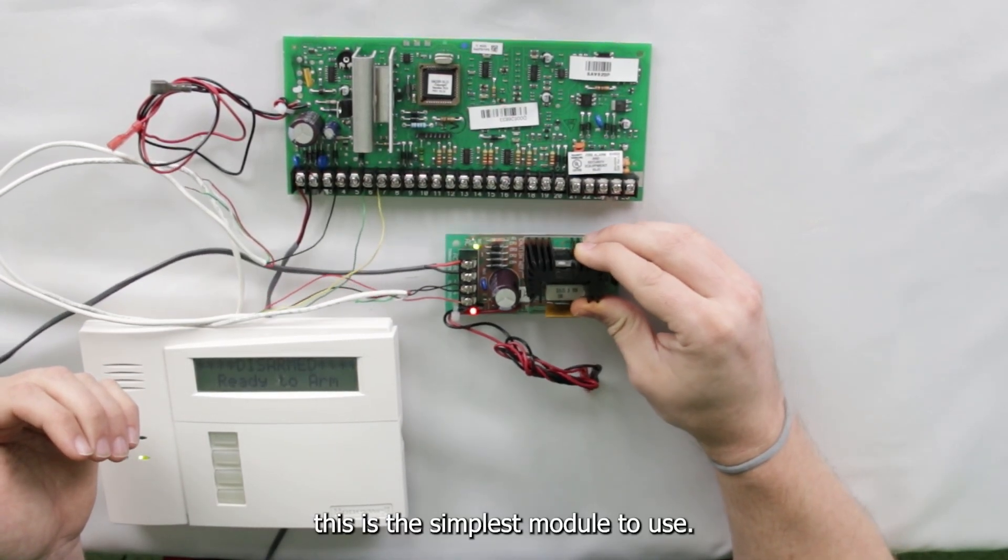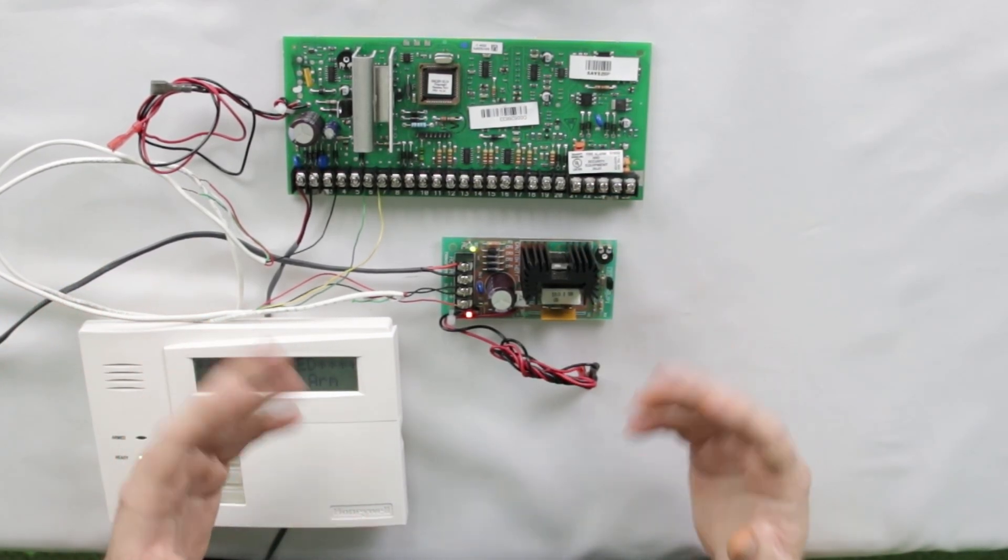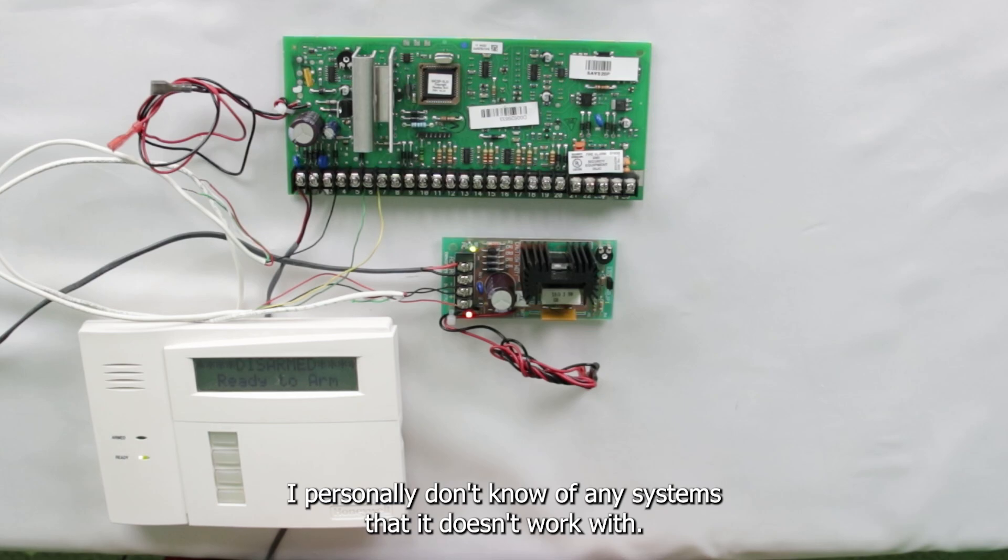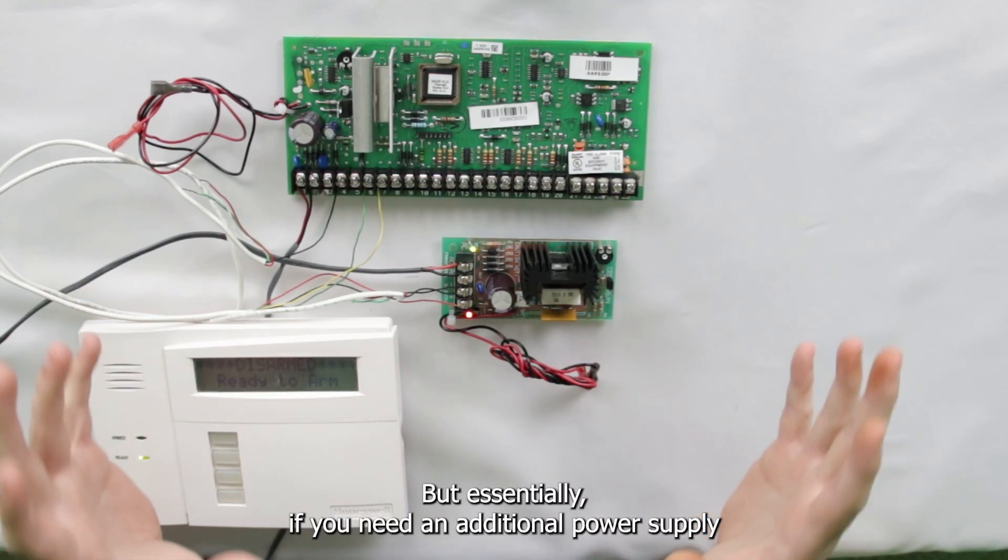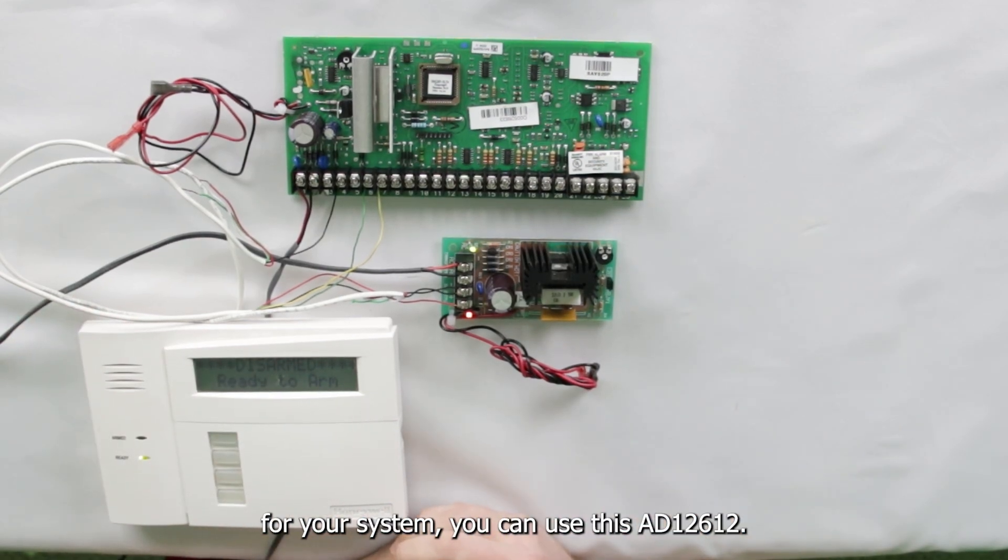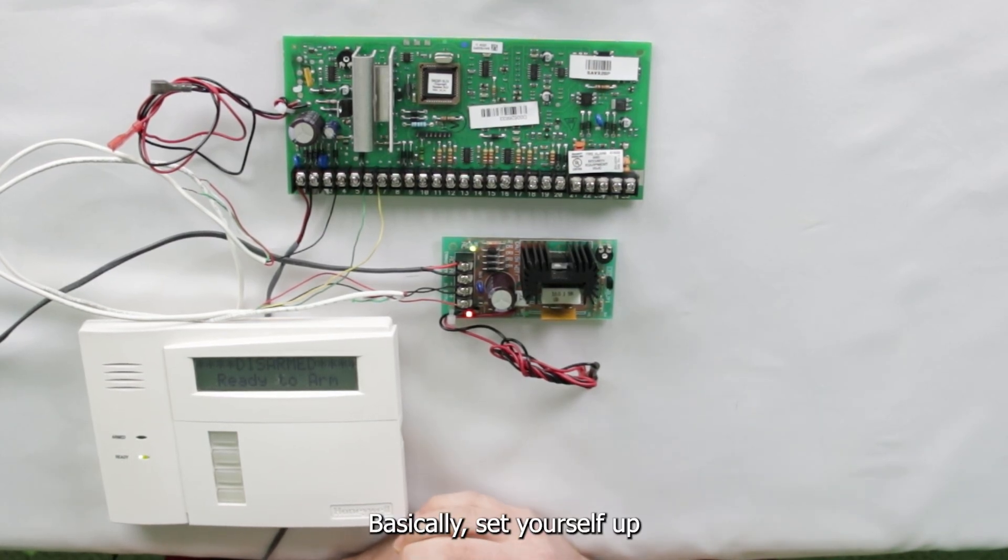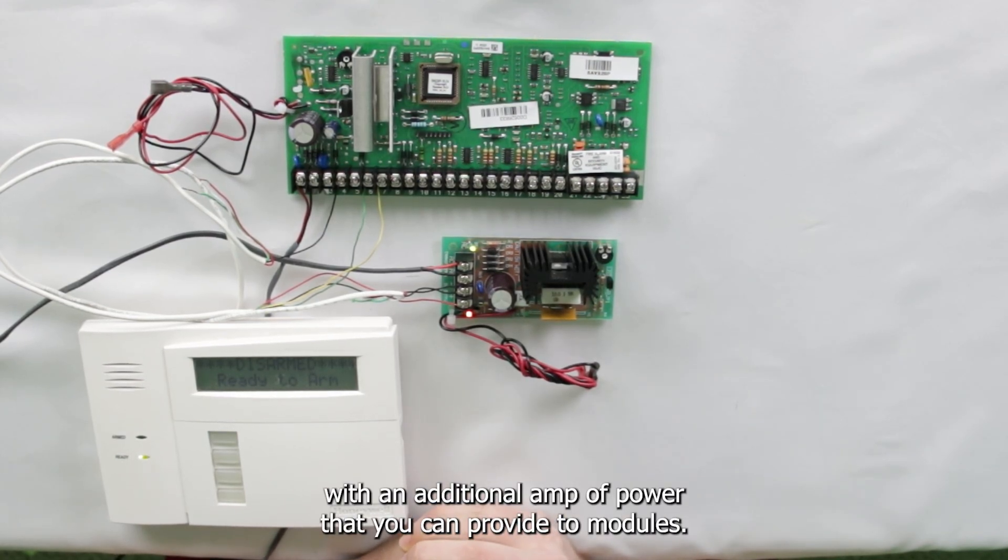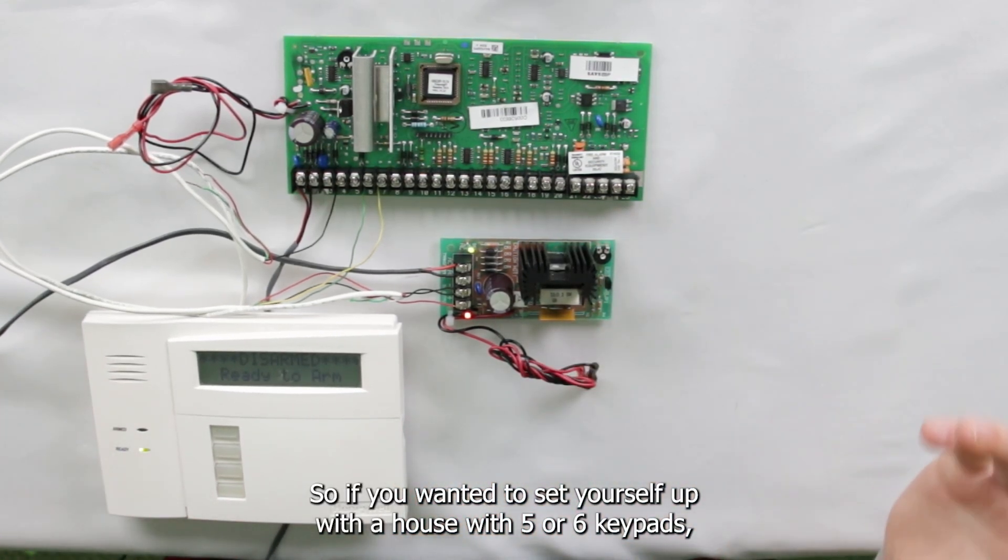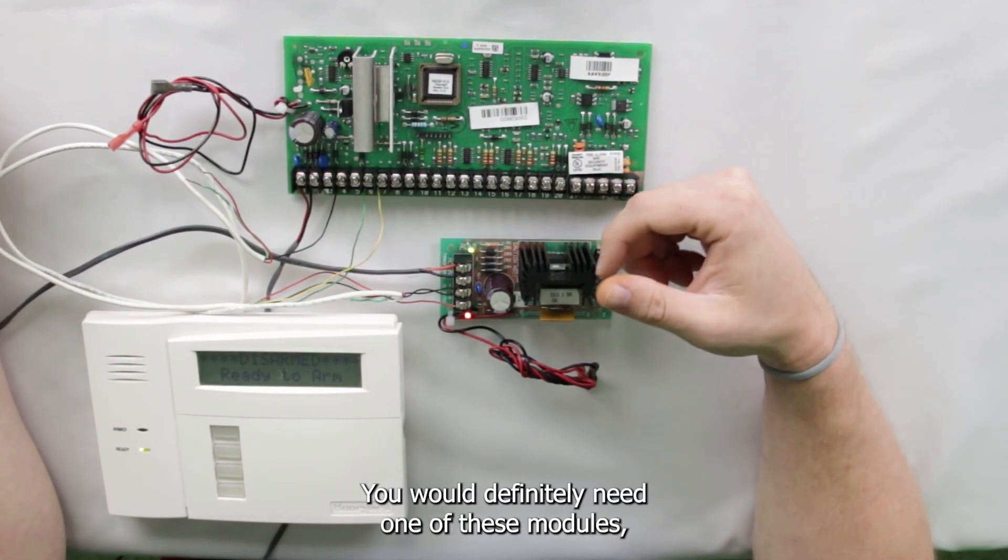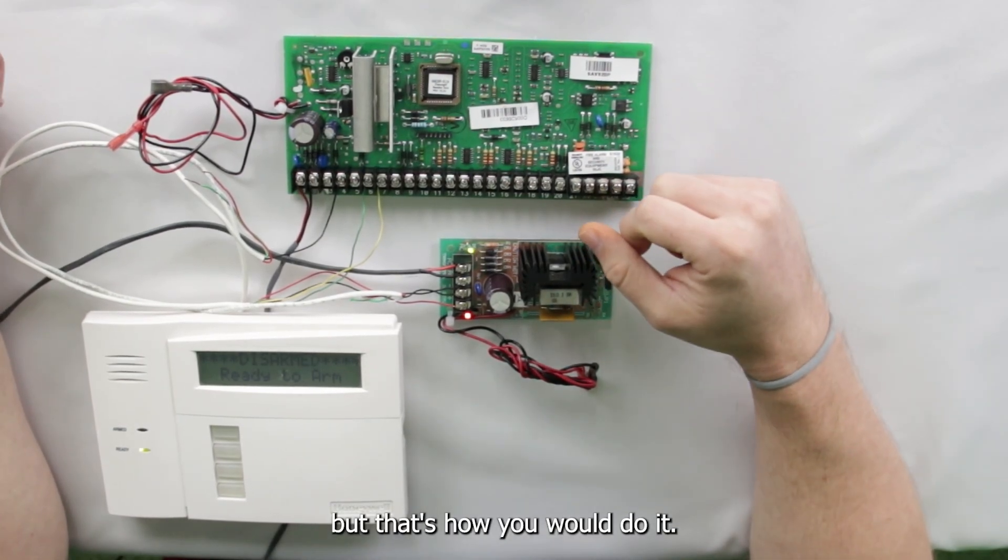Regardless of the situation, if you need additional power, this is the simplest module to use. This is pretty much a universal power supply. I personally don't know of any systems that it doesn't work with. That doesn't mean there aren't any out there, so don't quote me on that. But essentially, if you need an additional power supply for your system, you can use this AD12612. Basically set yourself up with an additional amp of power that you can provide to modules. So if you wanted to set yourself up with a house with five or six keypads, you're welcome to do that. You would definitely need one of these modules, possibly two depending on what else you got on the system, but that's how you would do it.